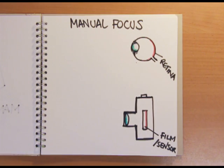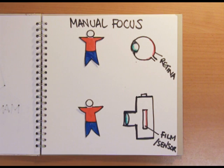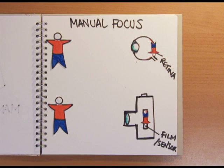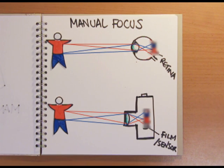Your eyes and a camera form an image in the same way. Light coming from a point on an object is focused by the cornea and the lens onto a point on the retina, or in the case of a camera, onto the film or digital sensor. But if the object moves further away, we have a problem. Each point is now focused onto a larger spot. These all overlap, producing a fuzzy image.